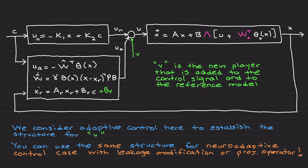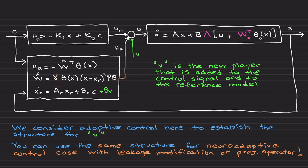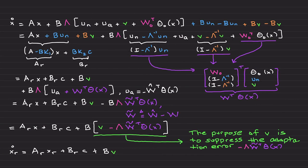After watching this video you will get the structure for v. If you would like to use it for neuroadaptive control, use neural networks here, which will impact the structure of theta. Use this weight update with projection operator, or you can add sigma leakage modification for the neuroadaptive control case — there is no loss of generality. Let me go ahead and start covering the structured uncertainty case.